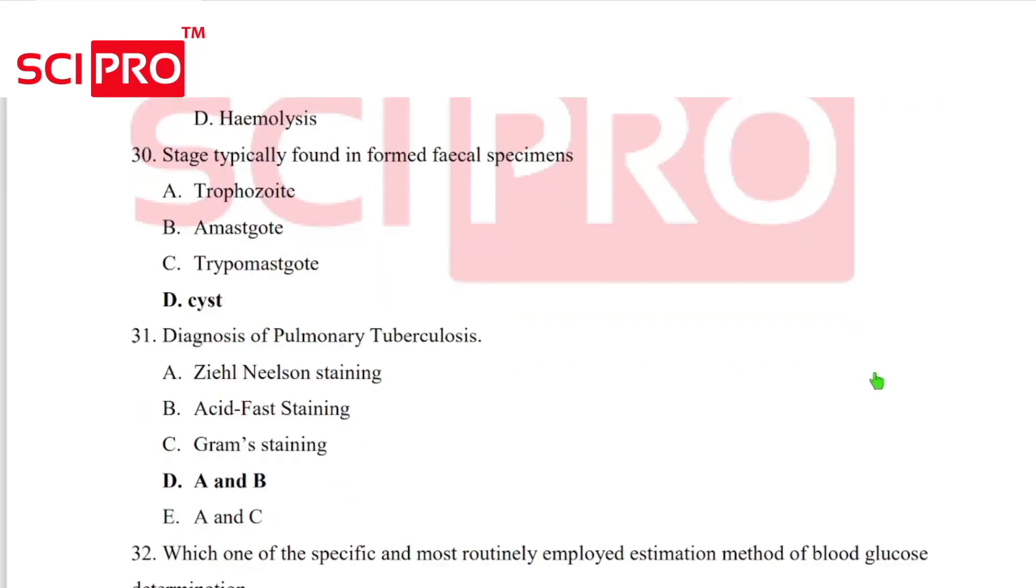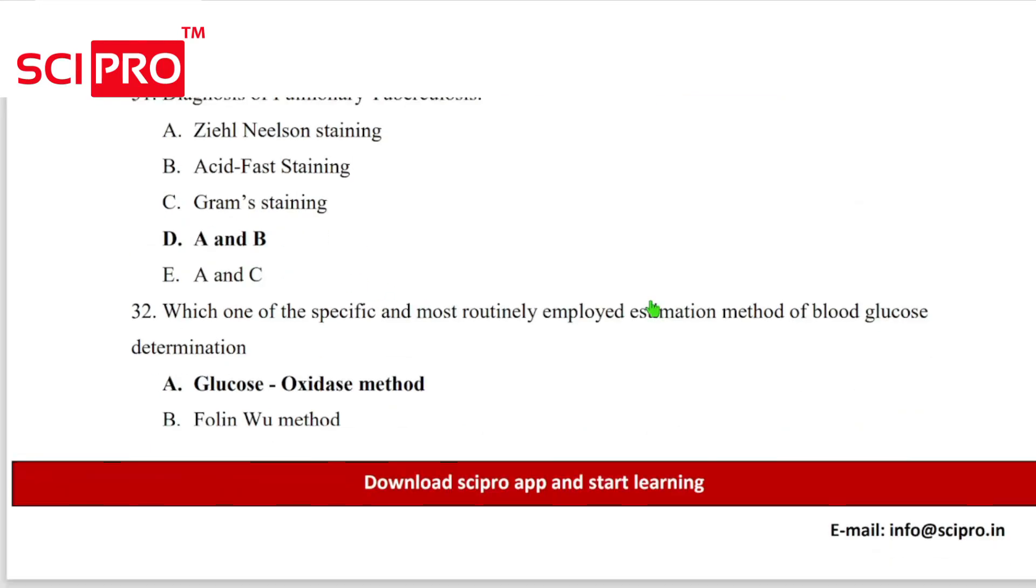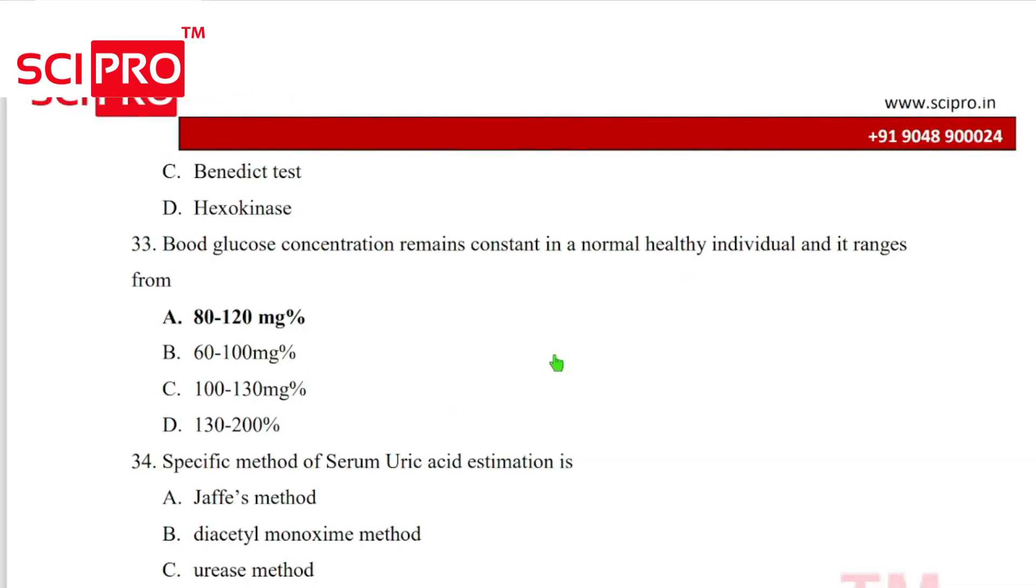Question number 31, answer option A and B. That is Ziehl-Neelsen staining and acid fast staining. Question number 32, answer glucose oxidase method. Question number 33, blood glucose concentration remains constant in a normal healthy individual and it ranges from 80 to 120.